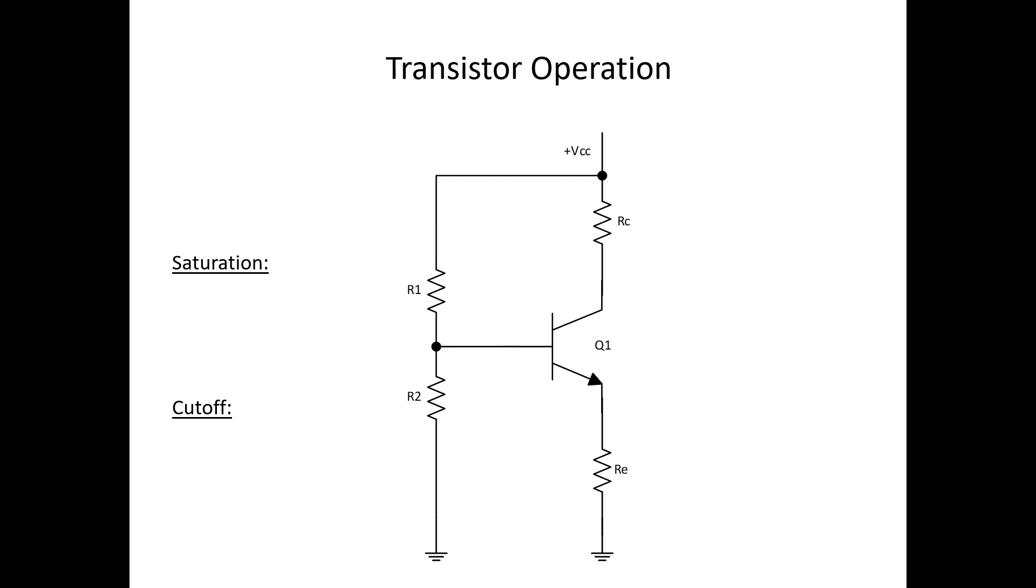So where it says positive VCC, let's apply 12 volts there. Now let's take a look at R1 and R2. They're going to act as a voltage divider network that actually develops our base voltage, which we'll call base bias.